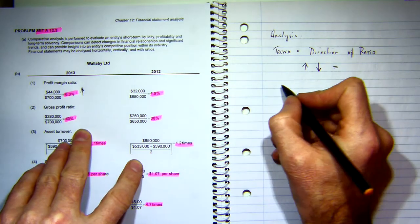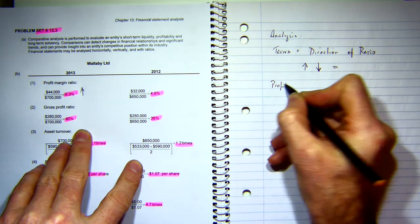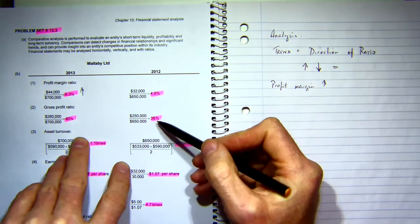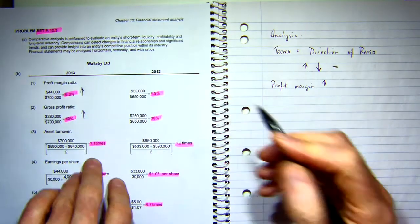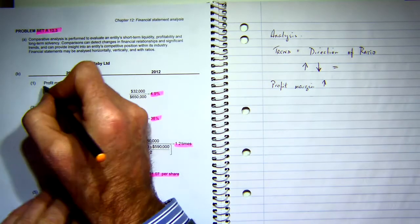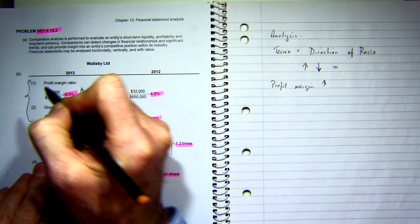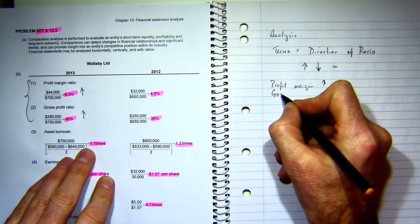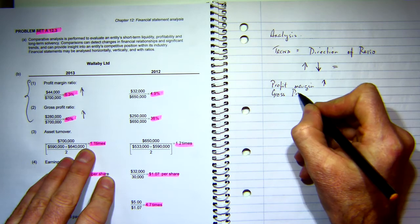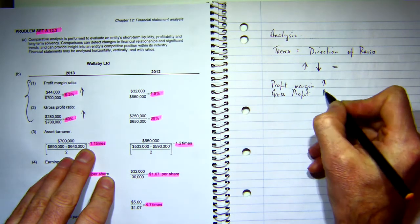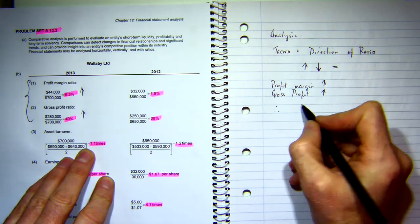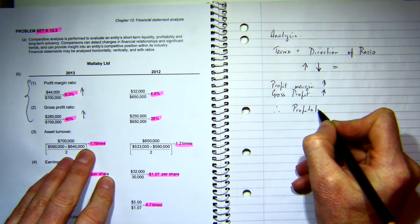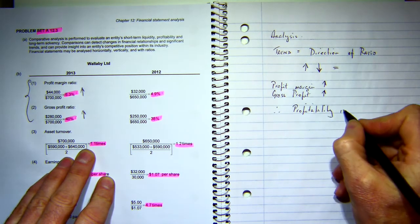Profit margin increased, gross profit margin increased as well. What we're going to do is group them - these are my profitability ratios. So profit margin increased, gross profit margin increased, therefore profitability is improving.